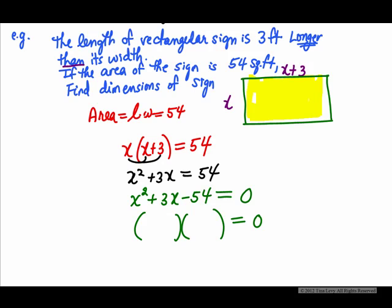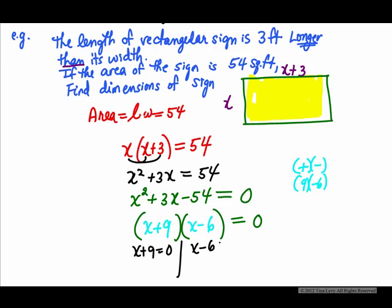We get x squared plus 3x minus 54 equals zero. For the factors: to get negative 54, we need a positive times a negative. Since the middle term is positive, the larger absolute value is positive, so we use 9 and negative 6. The factors are (x plus 9) and (x minus 6). Setting each equal to zero: x plus 9 equals 0 gives x equals negative 9; x minus 6 equals 0 gives x equals 6.